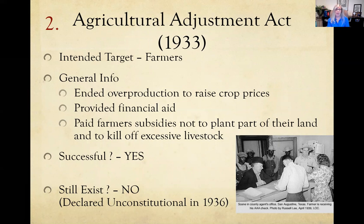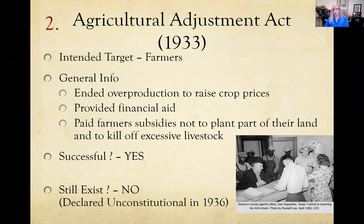The Agricultural Adjustment Act also aimed at helping farmers by raising crop prices. It provided subsidies — money paid to farmers to not grow crops or not raise as many cattle — because overproduction was driving prices down for everybody. This was successful at the time in helping crop prices, but it was declared unconstitutional in 1936. It came back in a different form, and we do still have government subsidies today to regulate crop prices and prevent overproduction of certain crops.